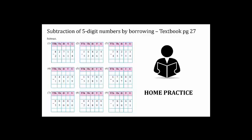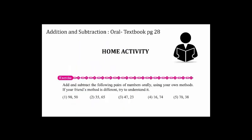We get our final answer: 30,739. Now, students, in the same way solve the sums given on textbook page number 27 as home practice. Also do the home activity on textbook page number 28: add and subtract the following pairs of numbers orally using your own method.